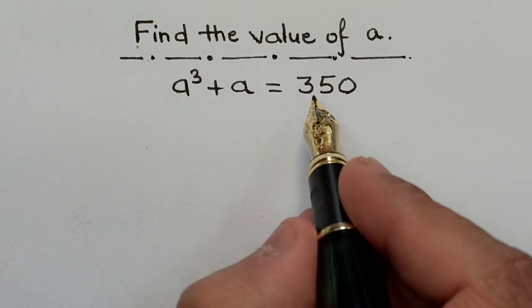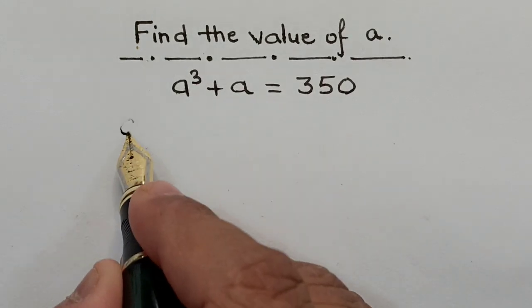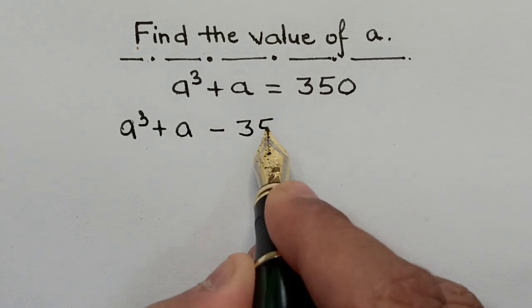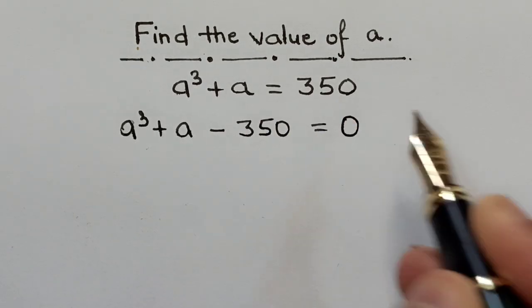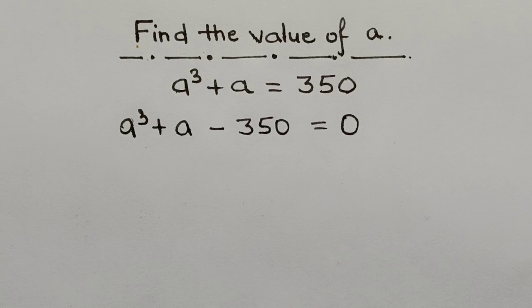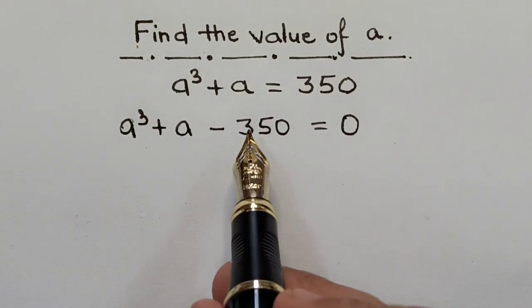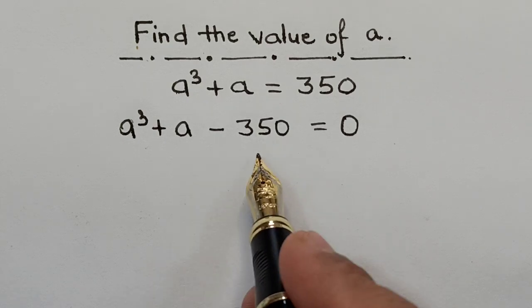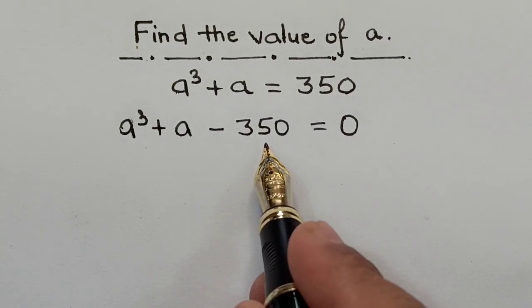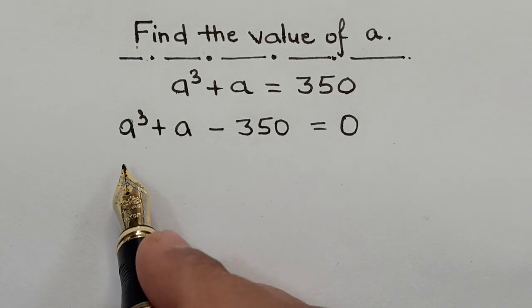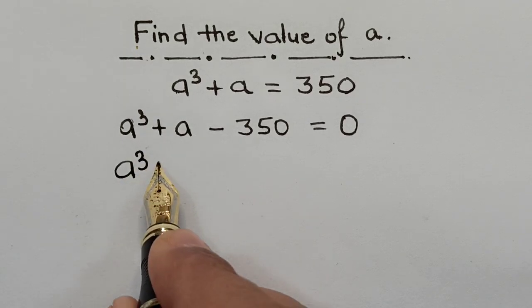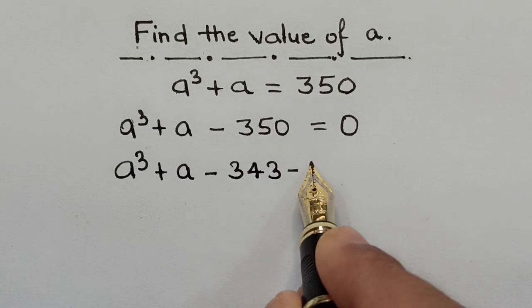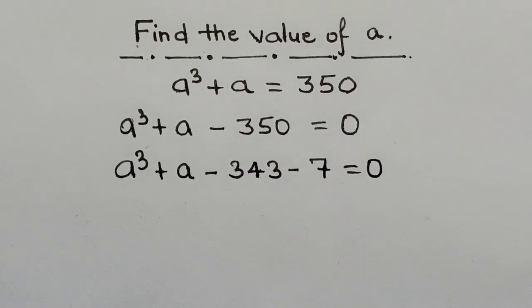First, we shift 350 to the other side, giving us A³ + A - 350 = 0. Next, we split 350 into 343 plus 7, so this becomes A³ + A - 343 - 7 = 0.